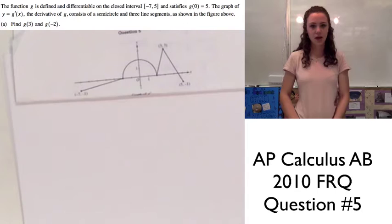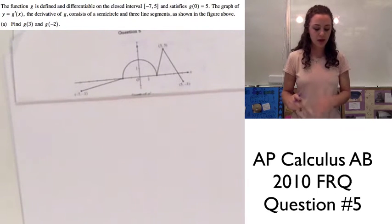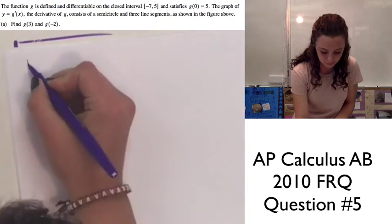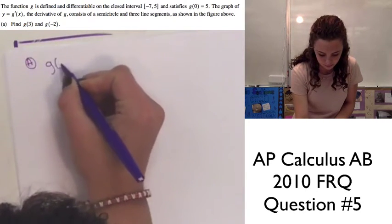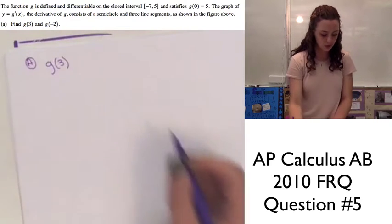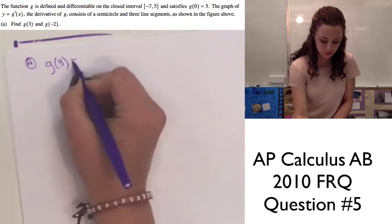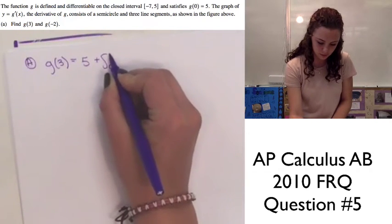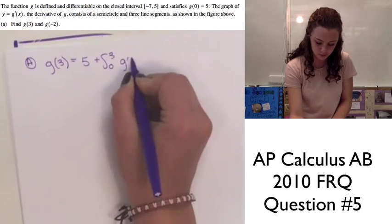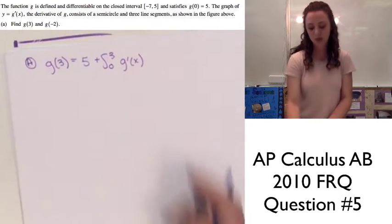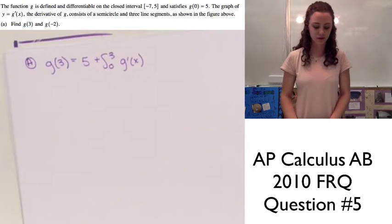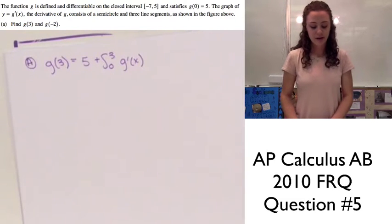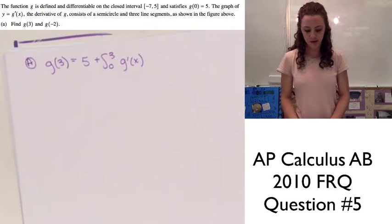Part A asks us to find g of 3 and g of negative 2. To find g of 3, we're going to do 5 plus the integral from 0 to 3 of g prime of x. We know that the integral of a derivative gives us the original function, which is what we're trying to find. We add 5 because g of 0 is equal to 5.